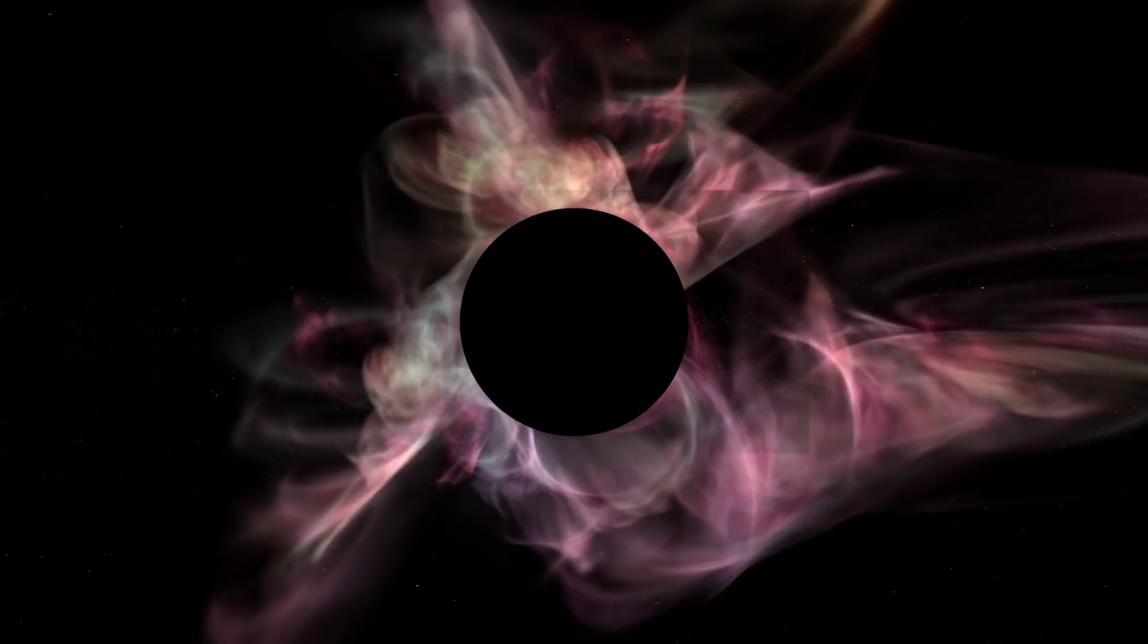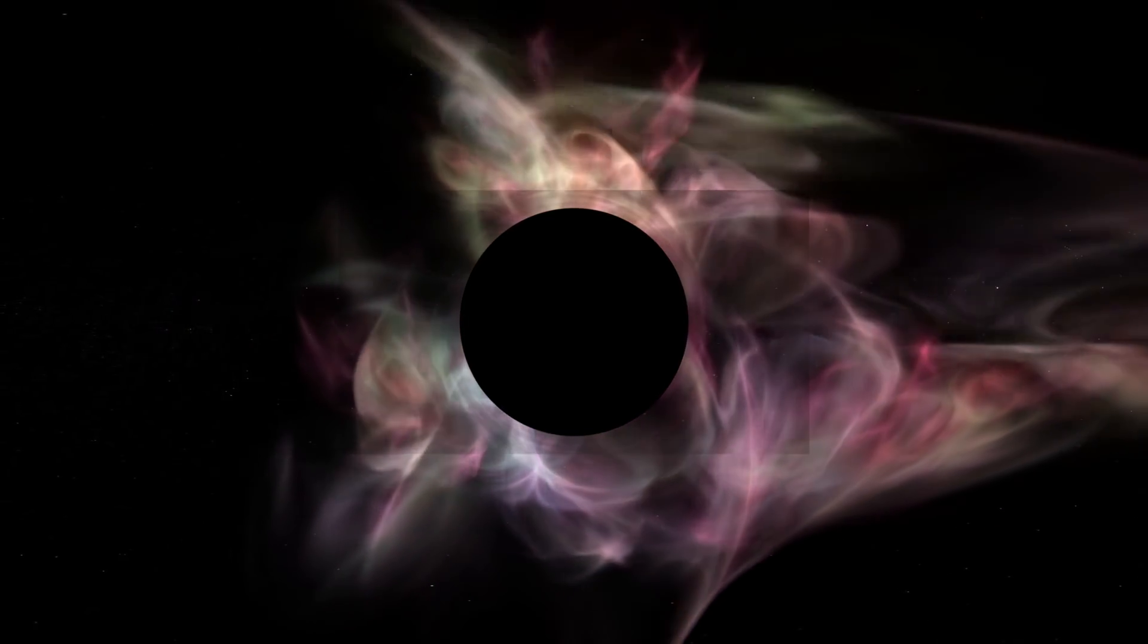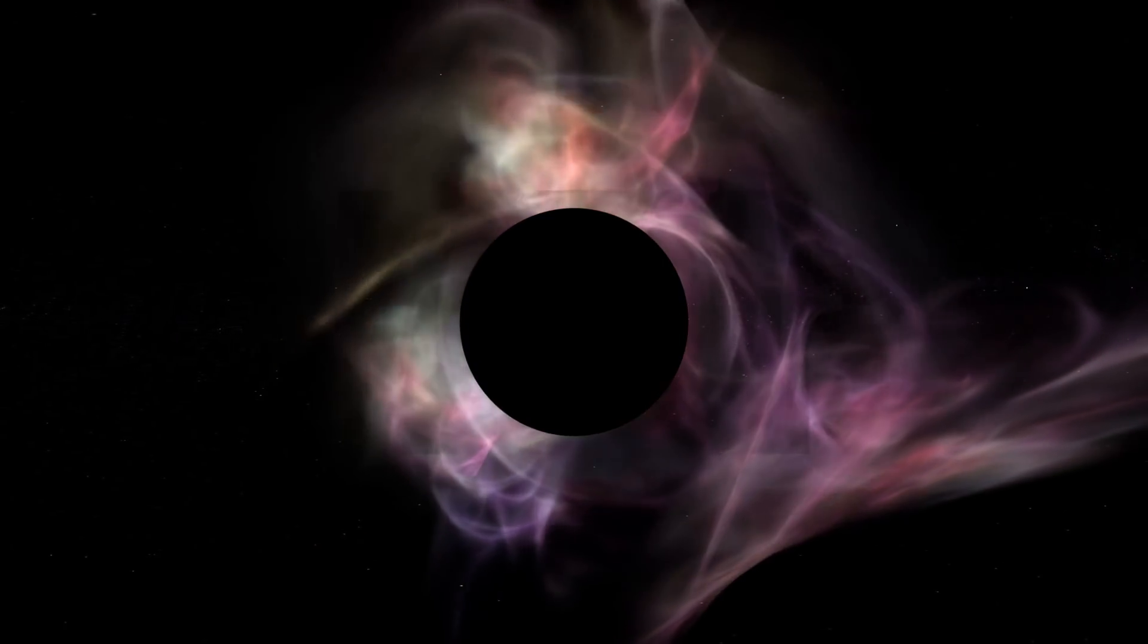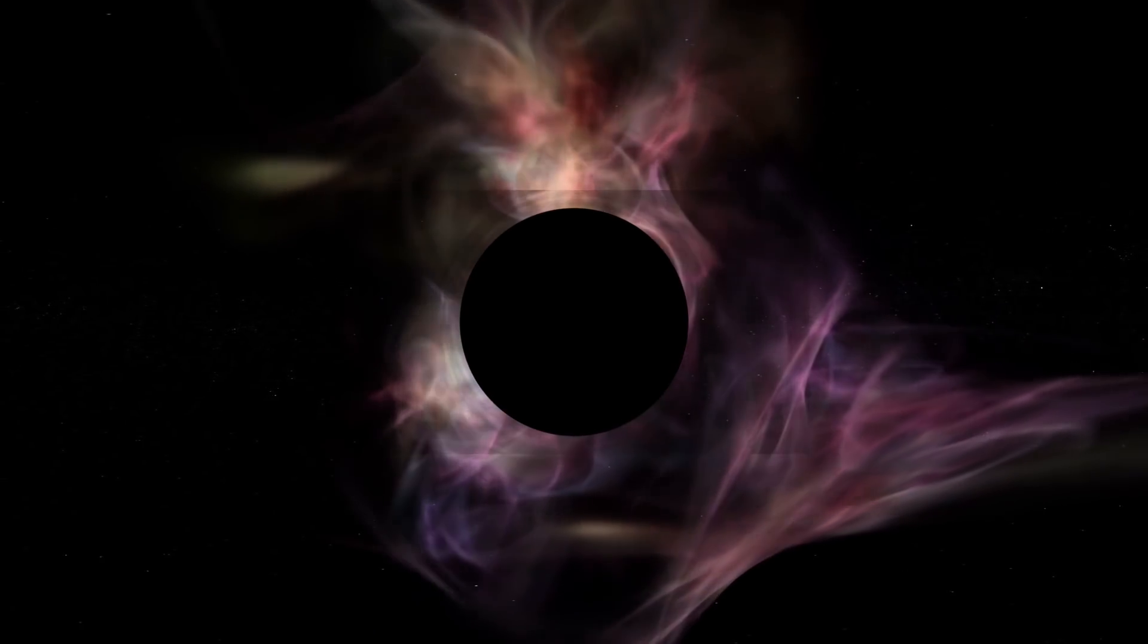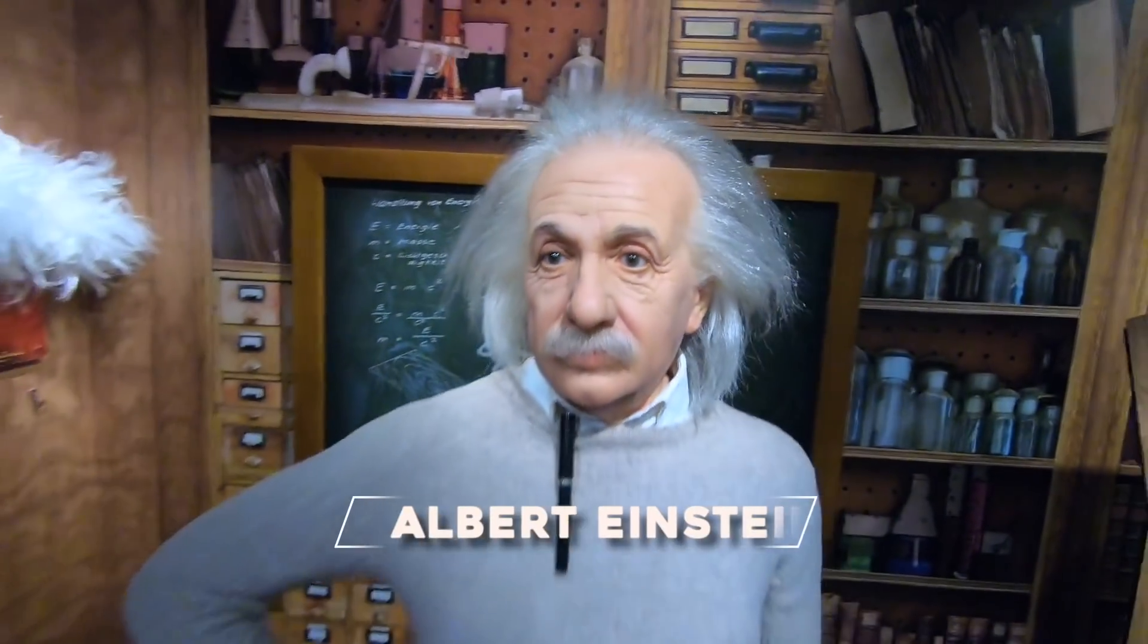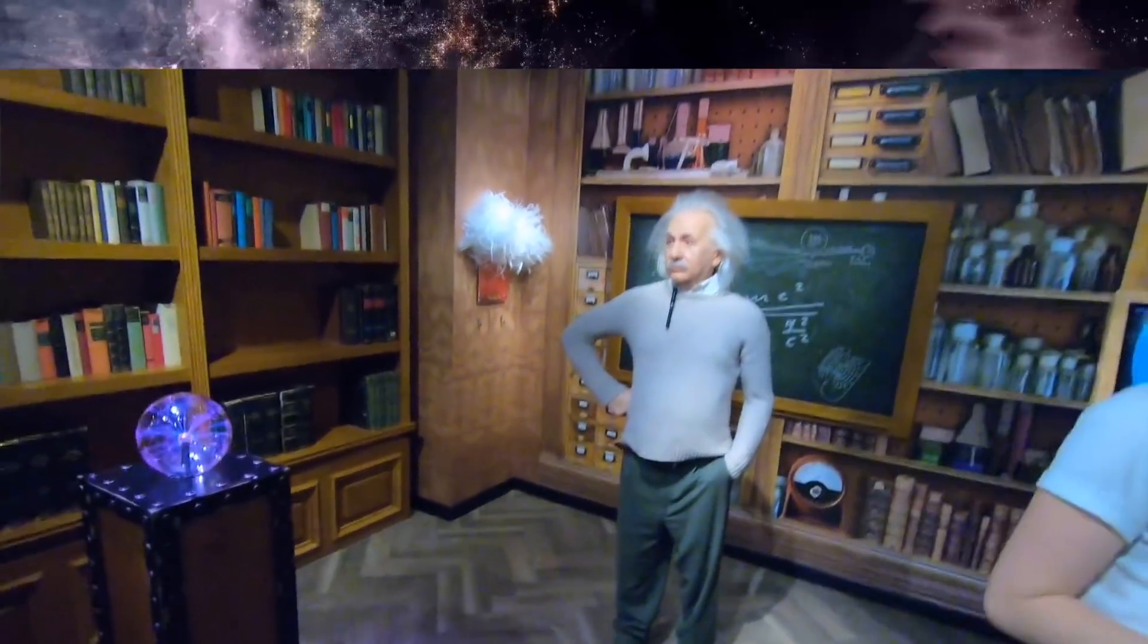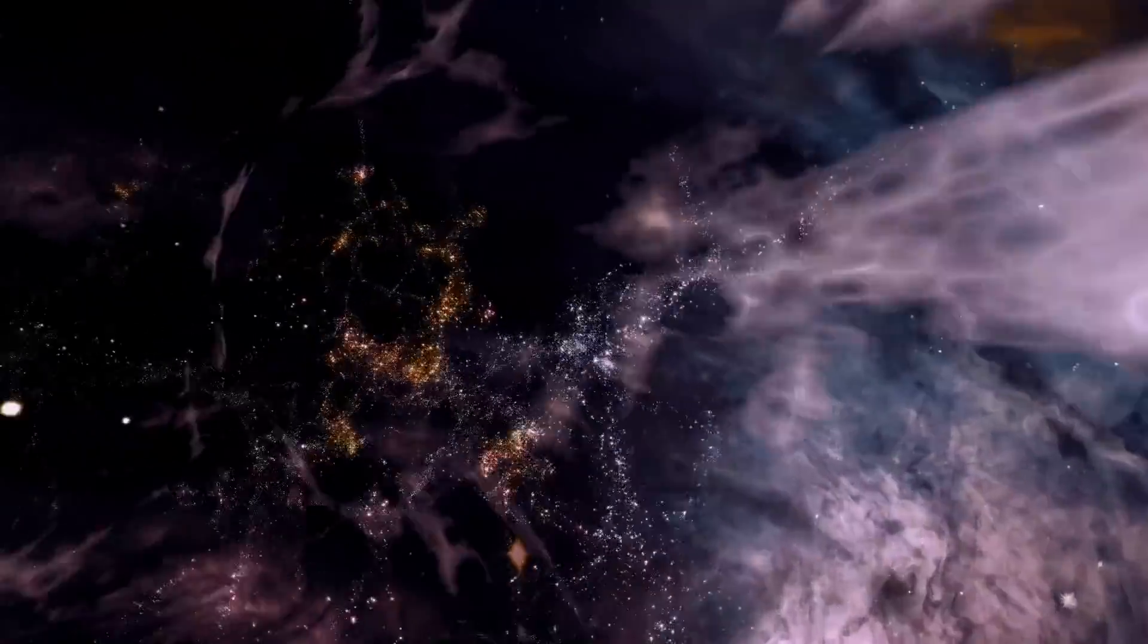Black holes are extremely dense objects with such strong gravitational attraction that even light cannot escape their grasp if it comes near enough. Albert Einstein was the one who first predicted the existence of black holes in 1916 with his general theory of relativity.